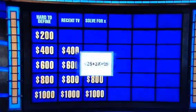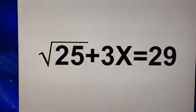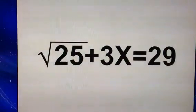Solve for x for 600. The square root of 25 plus 3x equals 29. Cameron. What is 8? 8 is right.